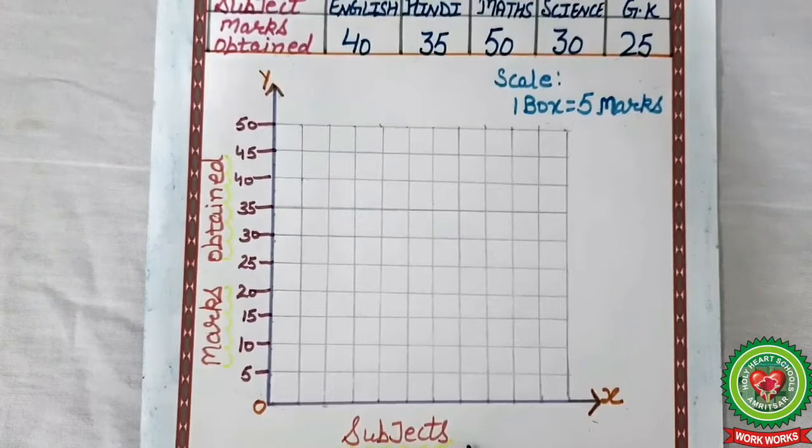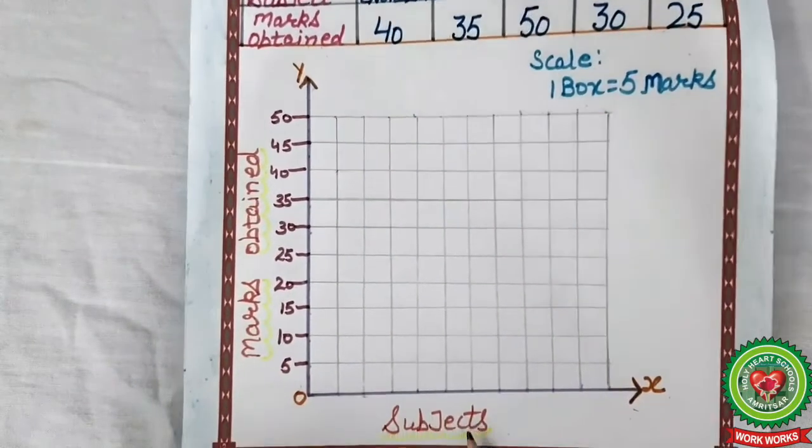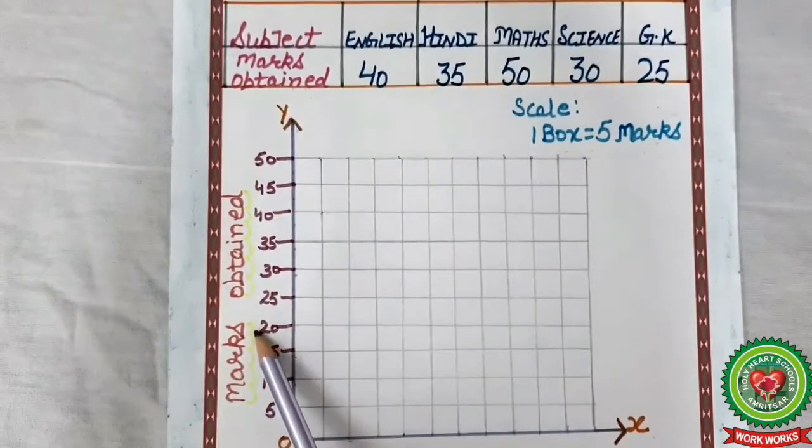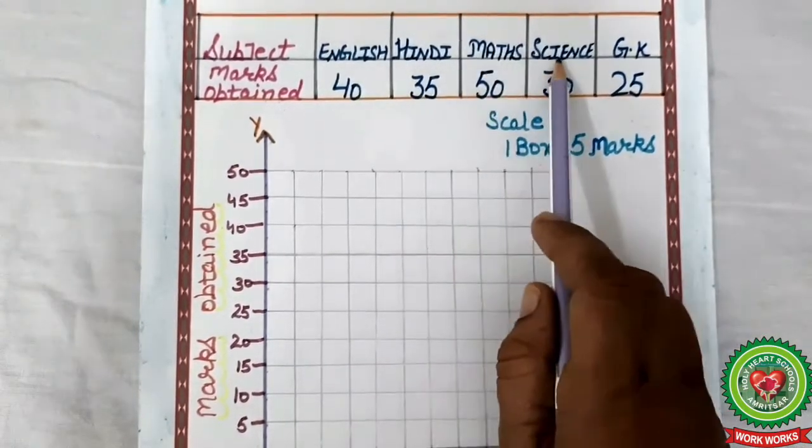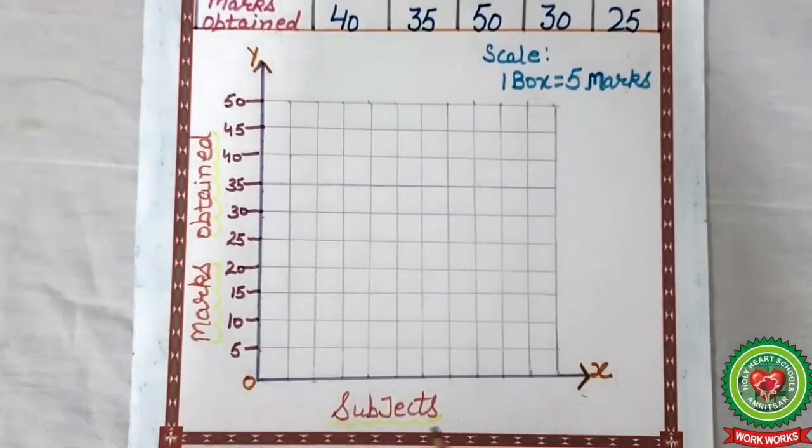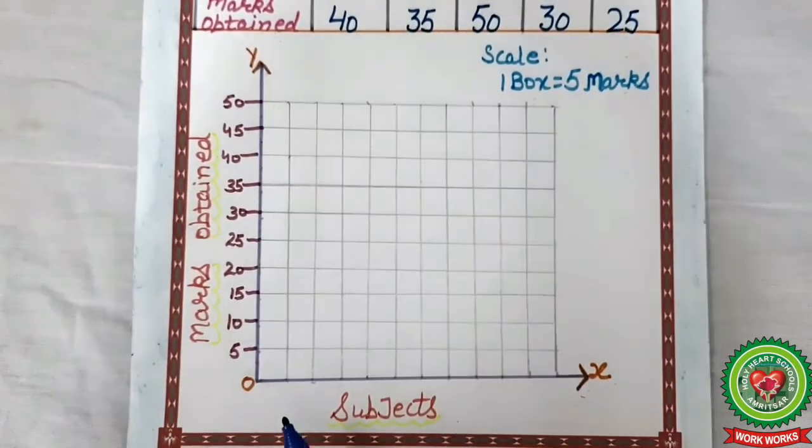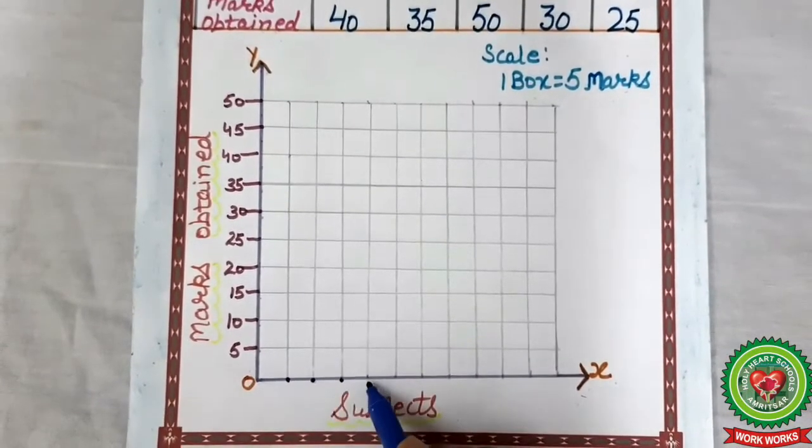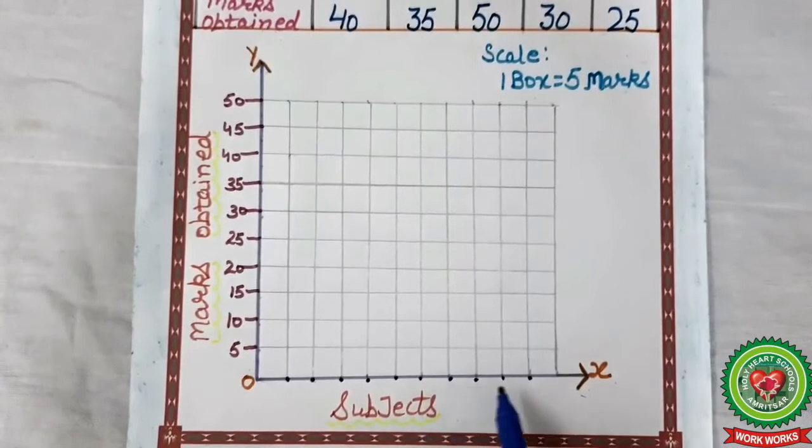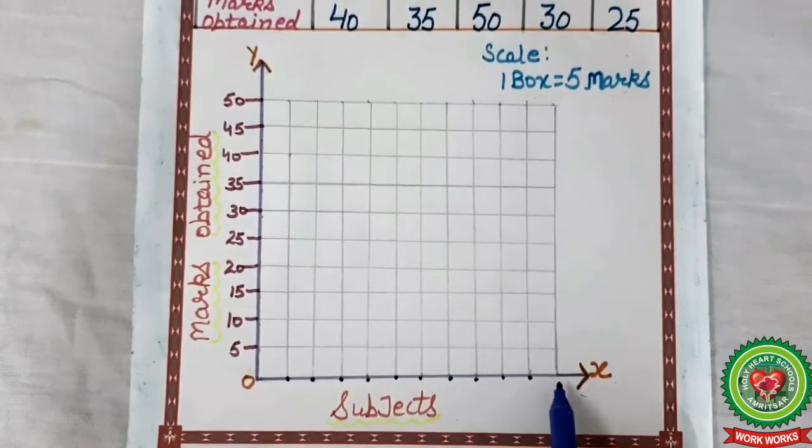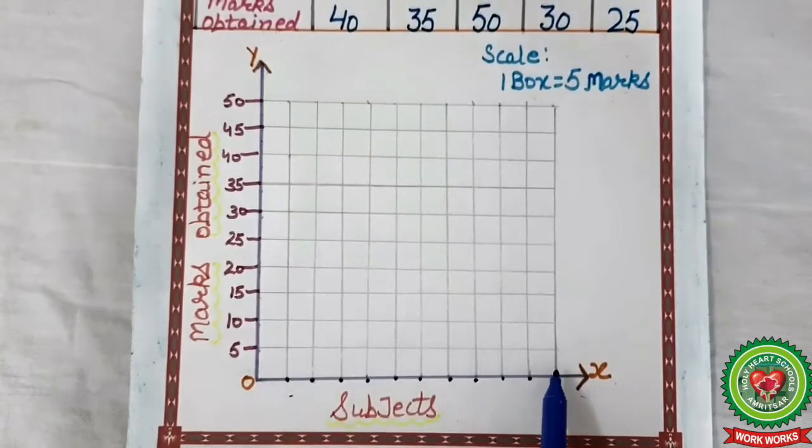Now on X-axis, we will write subjects, whatever is given in the first column. That we will write on X-axis: subjects on X-axis and marks on Y-axis. How many subjects are given? One, two, three, four, five. Five subjects are there. So we will mark 10 points on X-axis at equal margin. Five subjects, 10 points, double points.